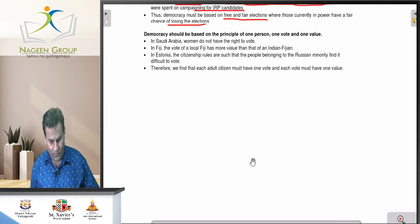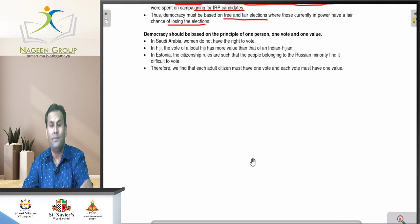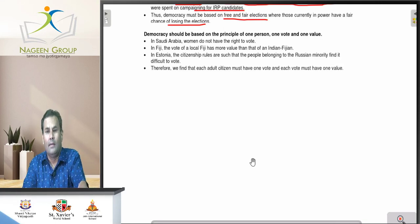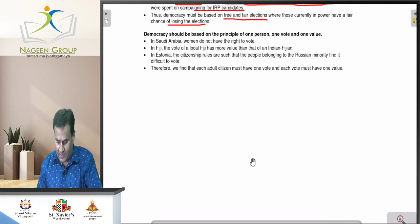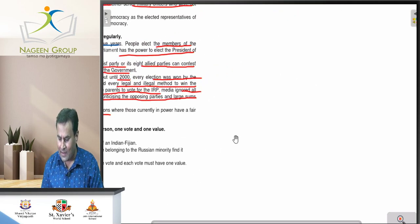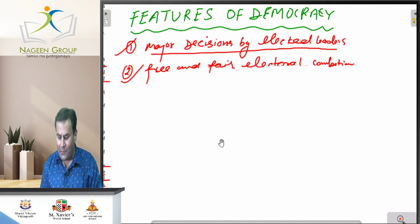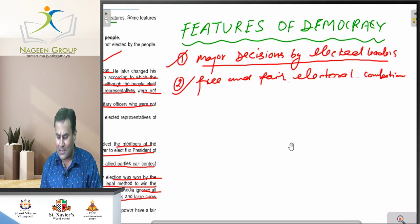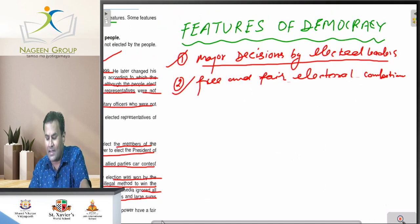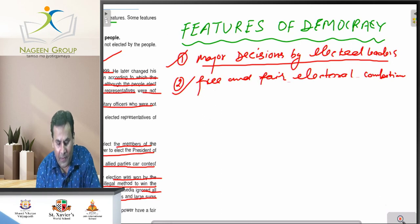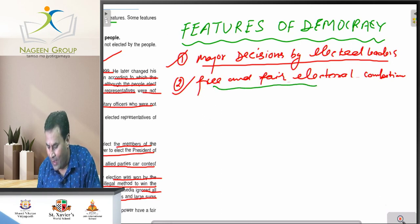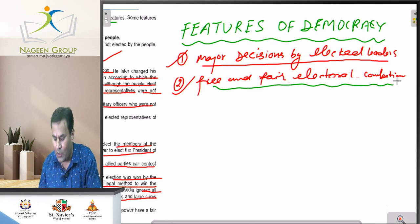Welcome once again. We continue our topic on the features of democracy. We have already discussed two important features: that major decisions are taken by elected leaders, and that free and fair elections exist with electoral competition.